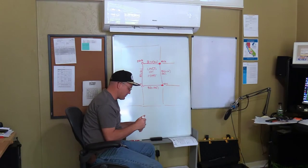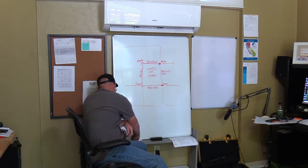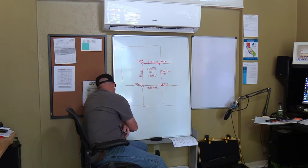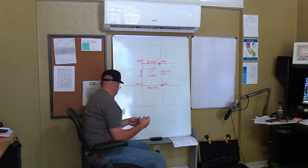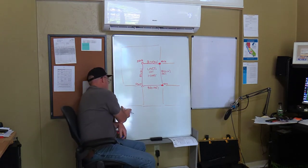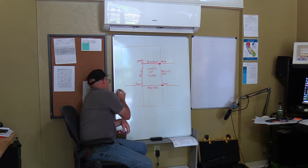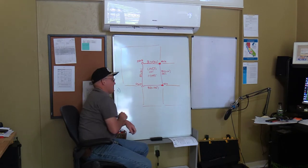Let's talk about different kinds of information that you find on survey maps. Let's just come up with a list. What kind of information do we find on boundary survey maps?